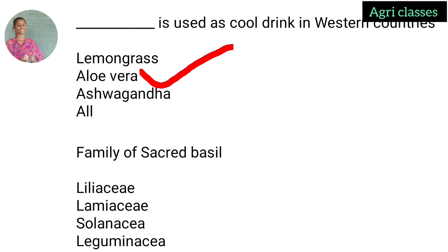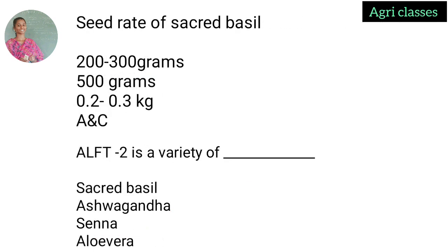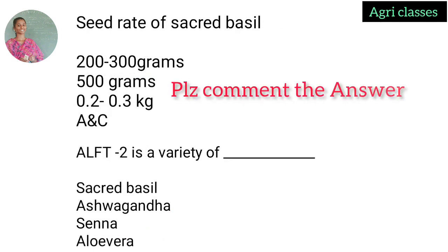Family of Saccharide bacille — options are Liliaceae, Lamiaceae, Solanaceae, Leguminaceae. Saccharide bacille is also known as Tulasi and its family is Lamiaceae. Aloe vera family is Liliaceae. Ashwagandha — next question: seed rate of Saccharide bacille — options are 200 to 300 grams, 500 grams, 0.22 to 0.3 kg, or A and C.